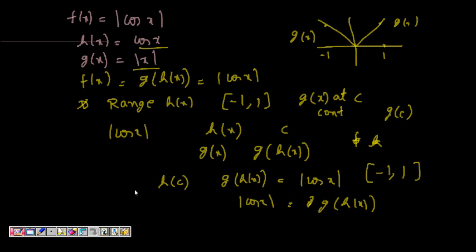The domain of this function is minus 1 to 1 and it is continuous at those points. So now you understand what continuity for composite functions means.